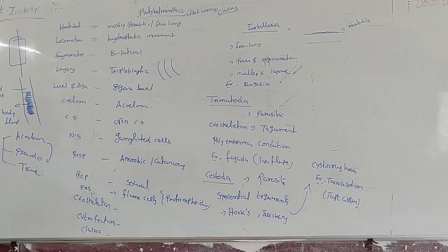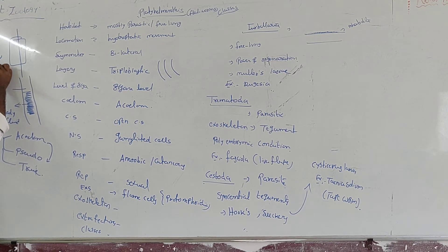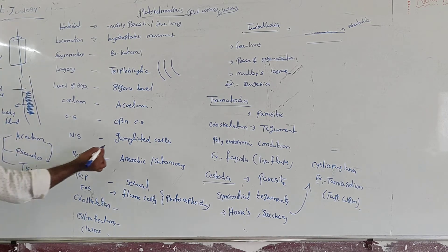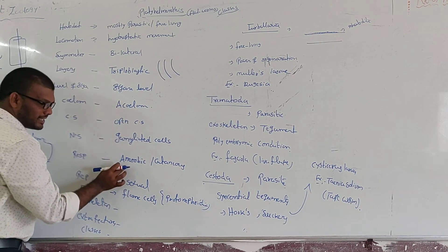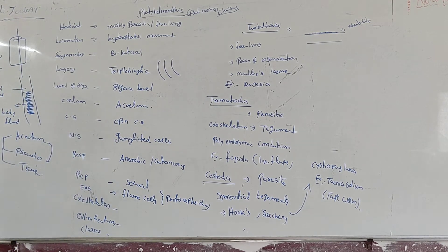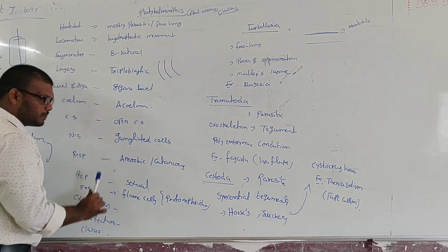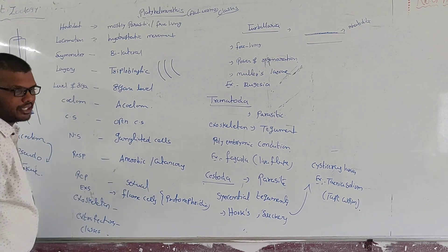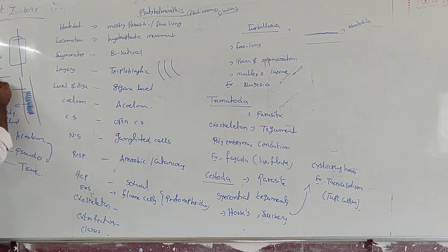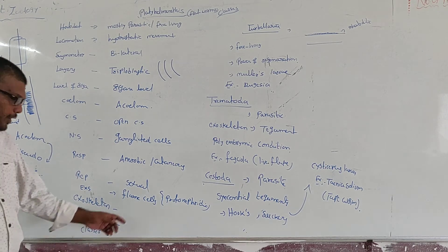The nervous system is gangliated. Ganglia means all the nerve cells are concentrated at one point — that is called ganglia, and those types of cells are called gangliated cells. If the organism is a parasite, the respiration is anaerobic — without oxygen. If the organisms are free-living, the respiration is cutaneous respiration, meaning through the skin.